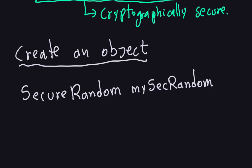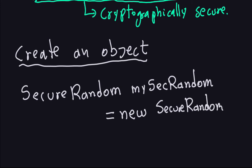Then you say equals new SecureRandom, and close parenthesis with a semicolon. It's almost exactly the same as we did before, but now we add the extra word 'secure'. So I'm calling this object 'mySecureRandom', and that's going to create an object of that class.